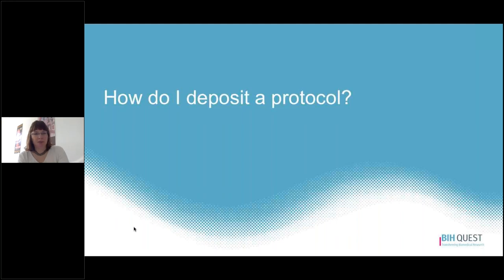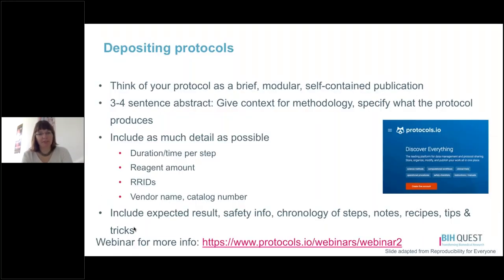How do you deposit a protocol? Think of your protocol as a brief, modular, and self-contained publication. Start with a three- to four-sentence abstract giving context for the methodology and specifying what the protocol produces — reading the abstract should help someone quickly determine if this protocol is useful to them. Include as much detail as possible: the duration or time for each step or sub-step, the amount of reagent, RRIDs for things that should have RRIDs, and your vendor name and catalog number for supplies. Also include additional information like expected results, safety information, a chronology of steps, notes, recipes, and tips and tricks.